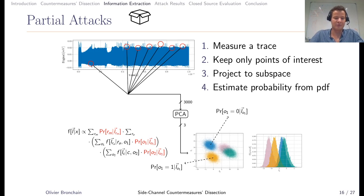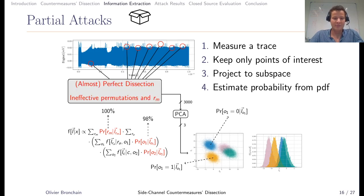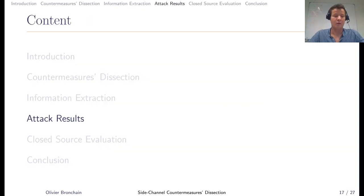If I go back to the equation, we did partial attacks on all testings, and for the multiplicative mask, we were able to recover it with 100% accuracy given one single trace. The same goes for the permutations. Overall, we were able to do an almost perfect dissection because multiplicative mask was completely ineffective while permutations were almost ineffective.